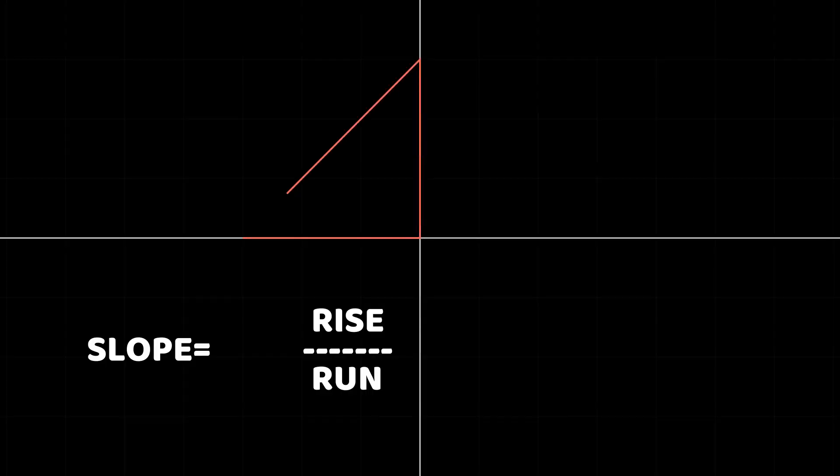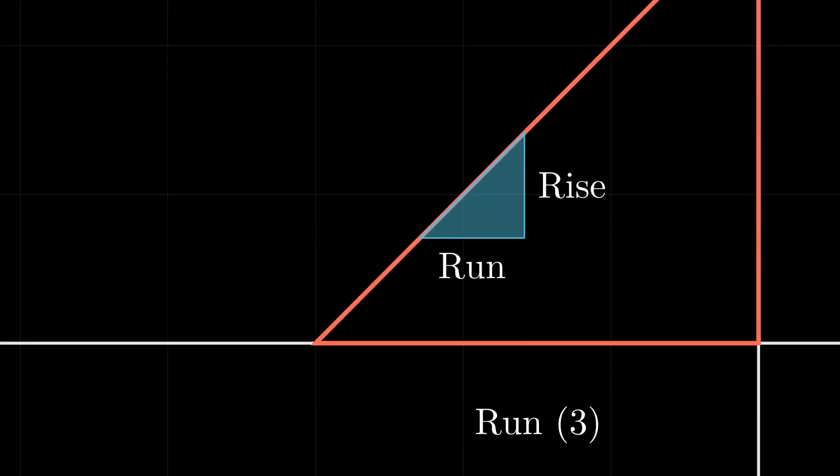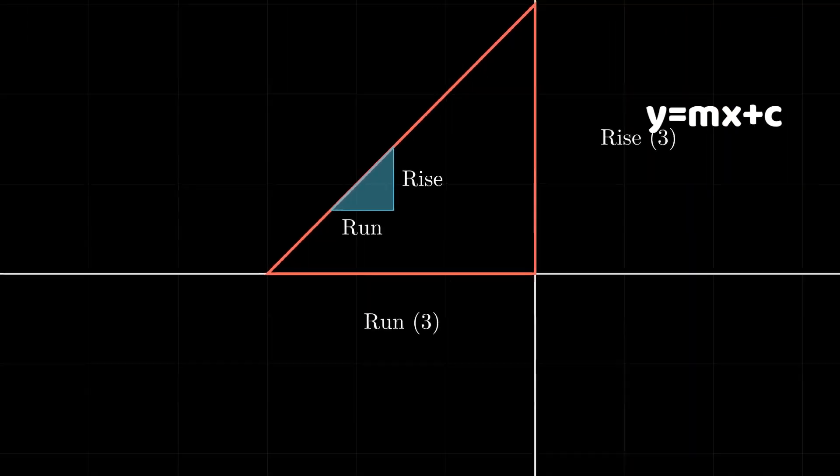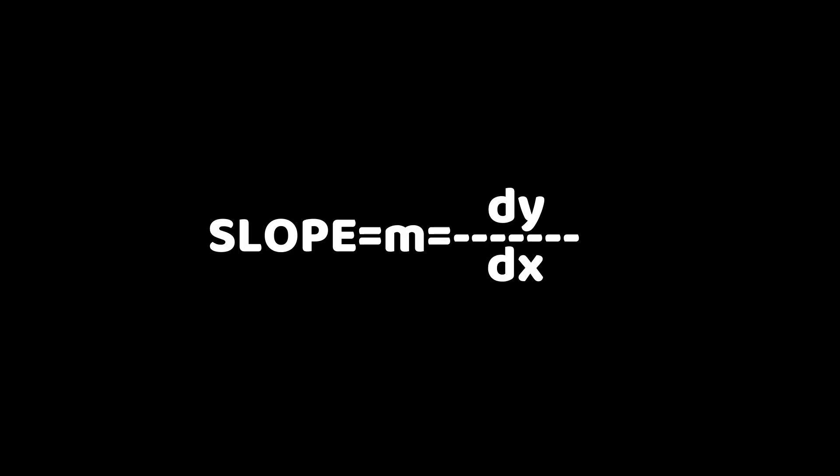Slopes are basically rise over run. So if we know the slope of a mountain, we can know its height without actually having to climb it. Similarly, in a right triangle, knowing the slope helps us determine how high the perpendicular is relative to its base. For a linear function like y equals mx plus c, y is directly proportional to x. For a small change in x, y will increase by slope times x amount. So slope is the rate of change of y with respect to x, or simply dy by dx. So if we know the rate of change of y with respect to x, we can know the value of y for any value of x at any instant along the triangle.